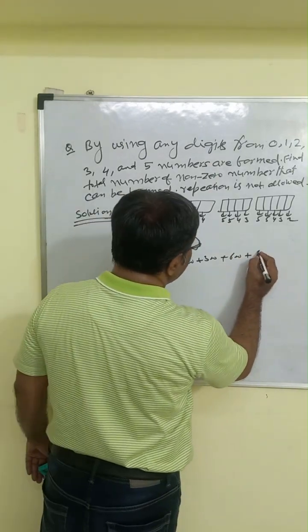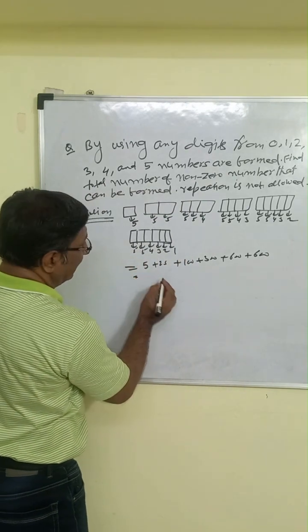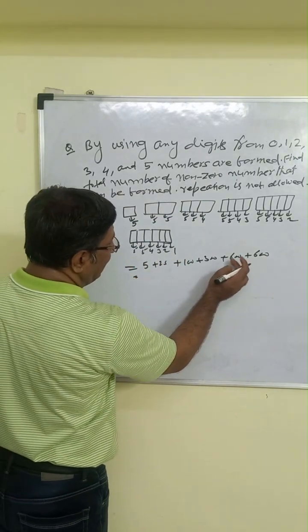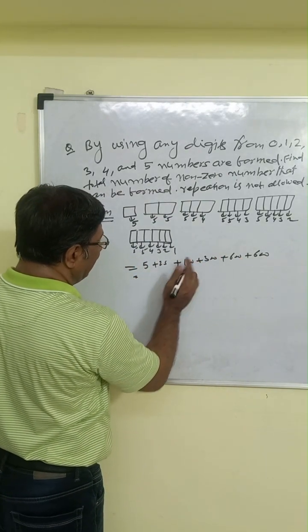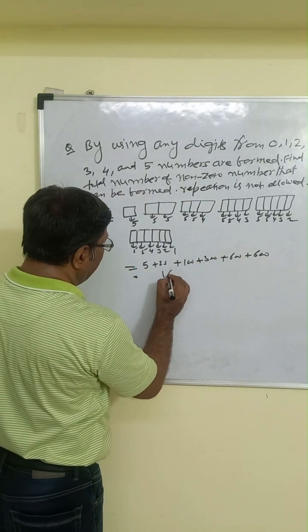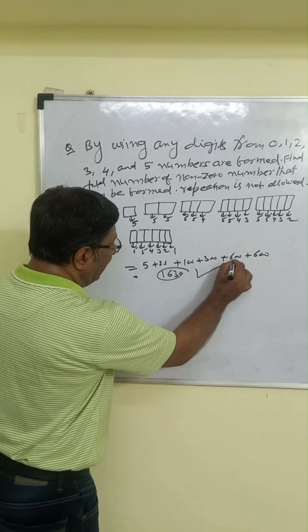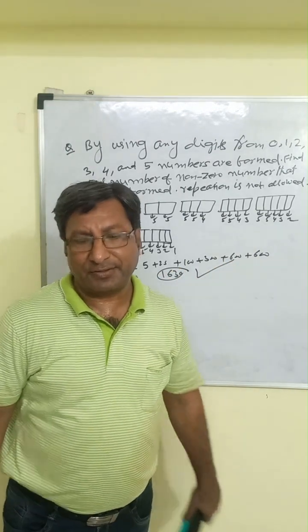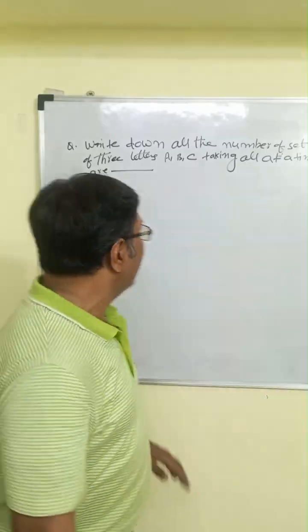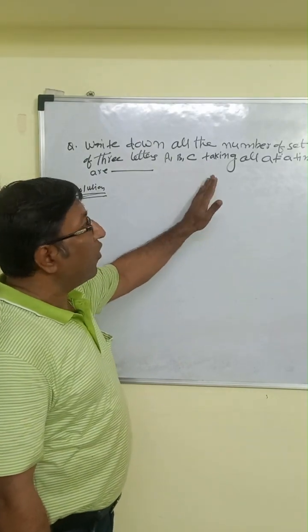Adding all these: 5 + 25 + 100 + 300 + 600 + 600 = 1630. So 1630 is our correct answer.